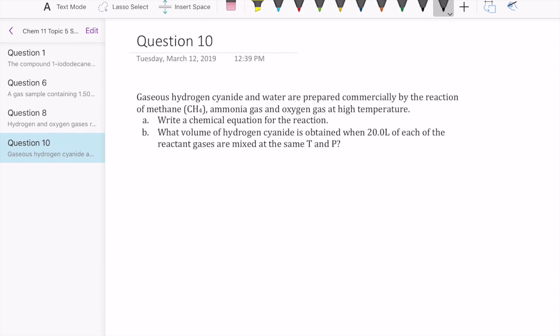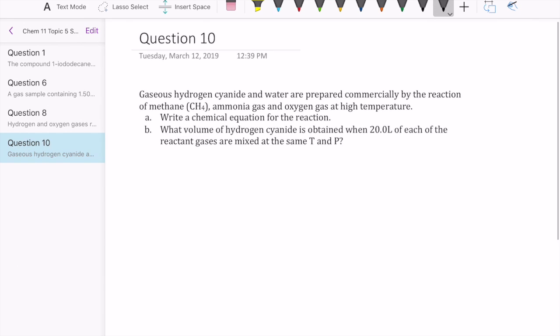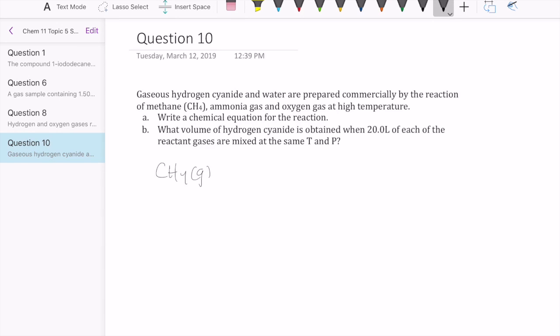Let's get started with just writing the reaction. The reaction includes methane, which is CH4 gas, ammonia, which is NH3 gas, and then oxygen, and all of these made HCN gas and then water gas. So what we have to do is balance this out. So that's the balanced equation.